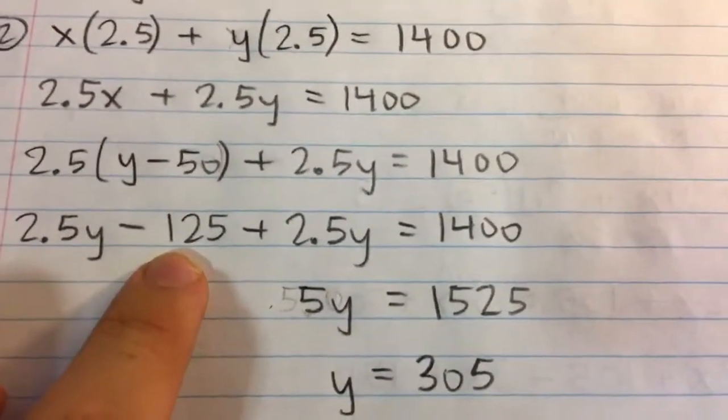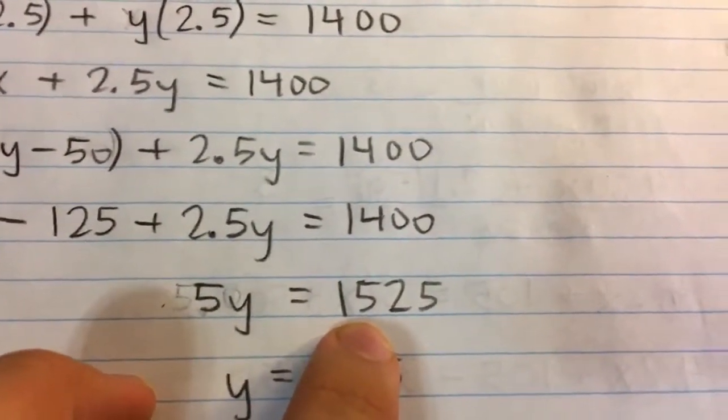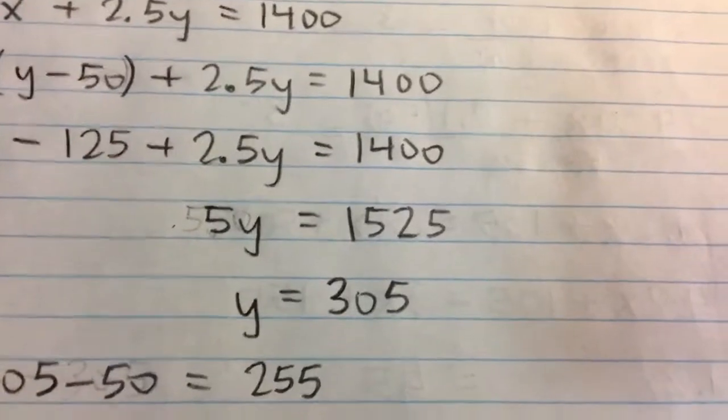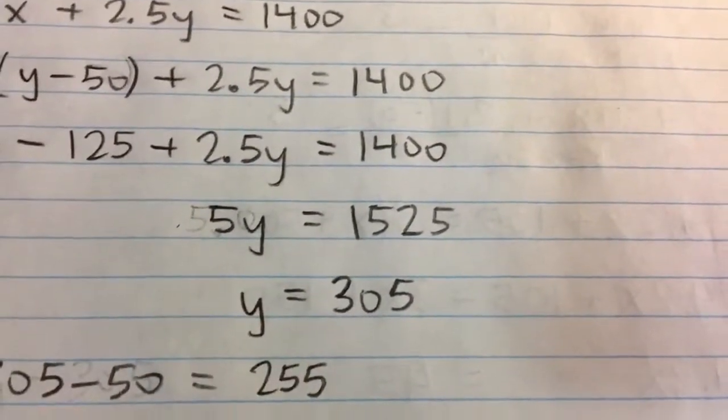Also, we can add 125 to both sides of the equation. So on the right, it becomes 1,525. Finally, to solve for y, we divide by 5 on both sides and we get y is equal to 305.